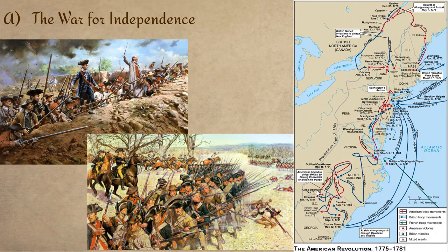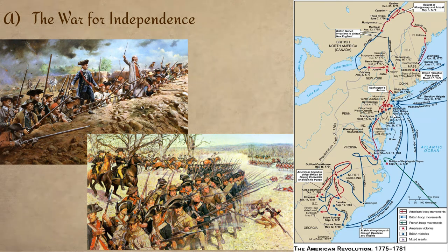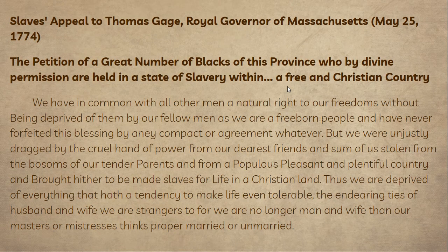The war for independence was a long and complicated struggle — you should absolutely watch the AP U.S. History videos or take that course if you want more detail. For now, basically the Americans failed to launch an invasion of Canada. Washington got chased around the middle part of the colonies by General Cornwallis. Eventually a very decisive victory at the Battle of Saratoga saw American militia forces defeat a British army marching southward, and from there the war moved south. Here's an appeal of enslaved people to Thomas Gage, showing some of the fault lines within the American Revolution and the people who were not included in 'All Men Are Created Equal' — pause and answer questions here.